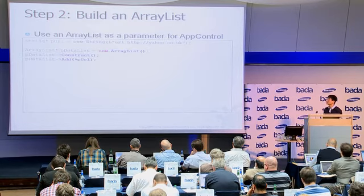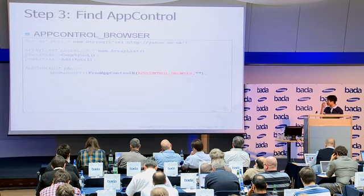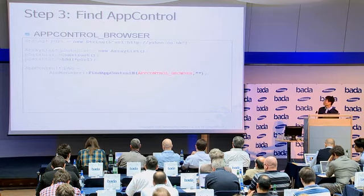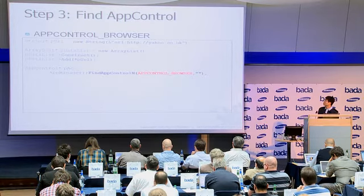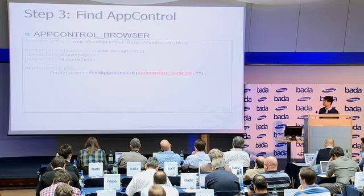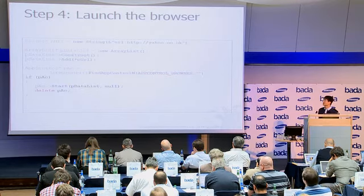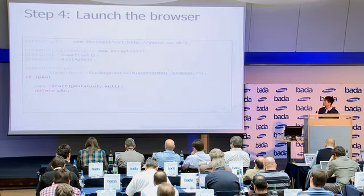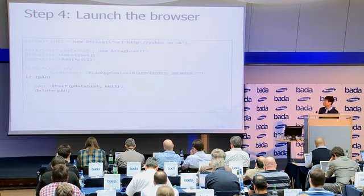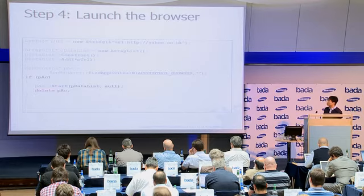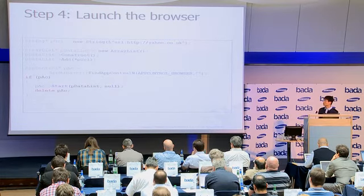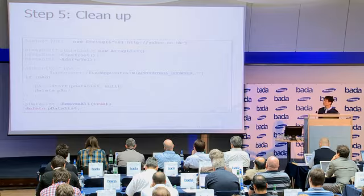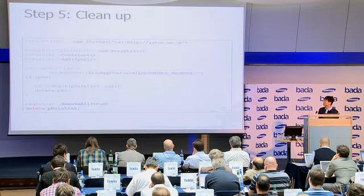The third step is finding the app control. I'm considering just the browser, so I give the parameter to the browser. If it's found, then I can start it with this information. This information contains the full URL for the Yahoo page. Then the final step is cleanup — after using the app control, you clean up this information.